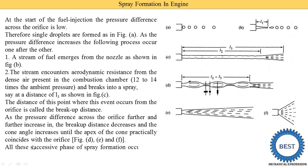All these successive phases of spray formation occur in a very short time. The engine runs at very high speed — for example, a four-stroke diesel engine running at 4000 RPM means diesel is sprayed 2000 times per minute. So this process is very quick.